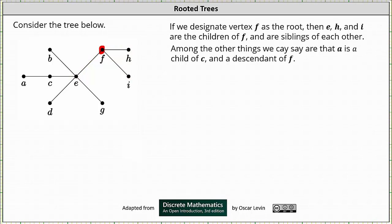Among other things, we can say that A is a child of C and a descendant of F. Notice vertices A and C are adjacent. Since C is closer to F, C is the parent of A and A is the child of C. If we take the path from A back to the root, notice how it ends at F, which is the root. Therefore, A is a descendant of F, and F is an ancestor of A.